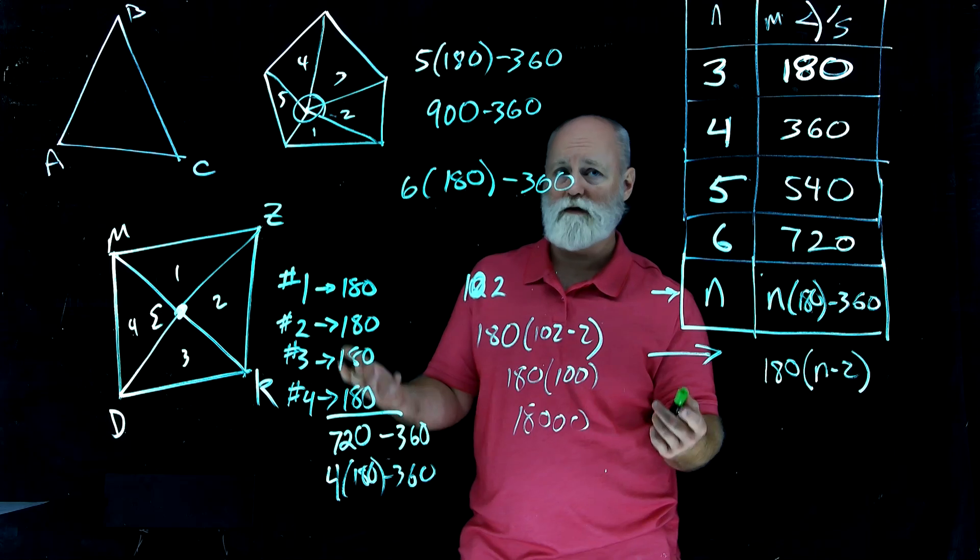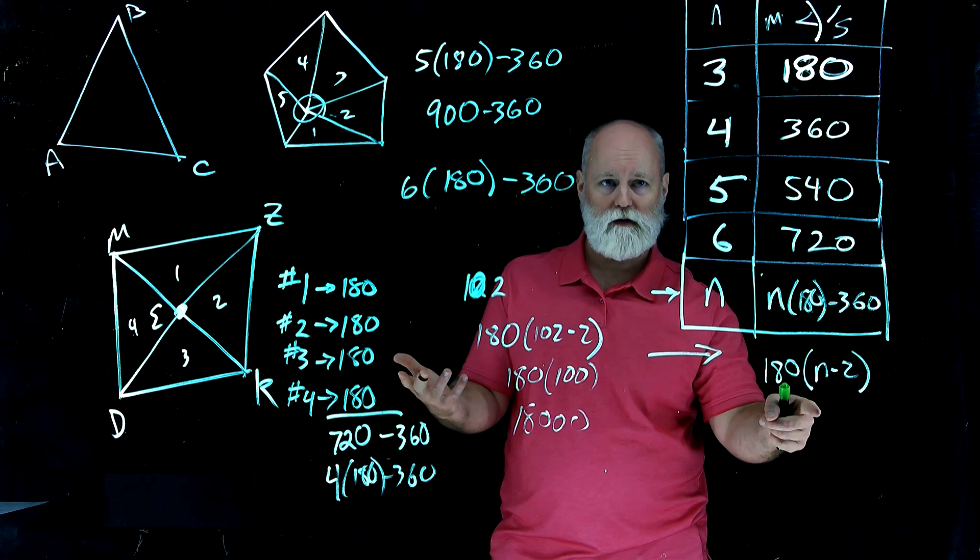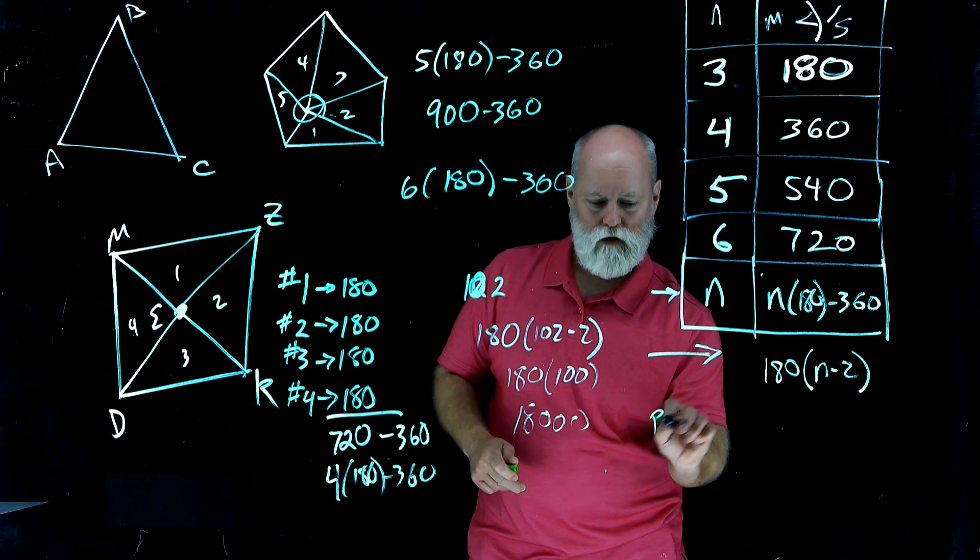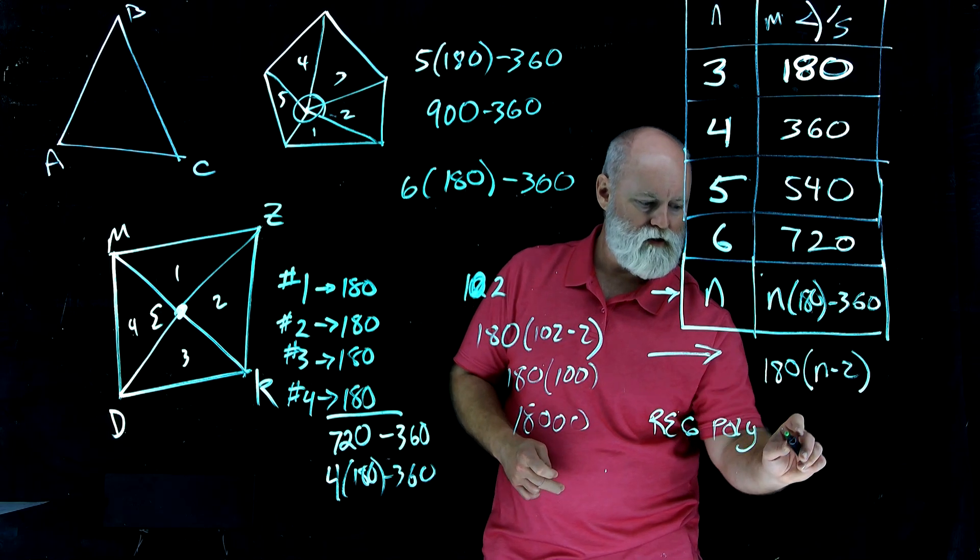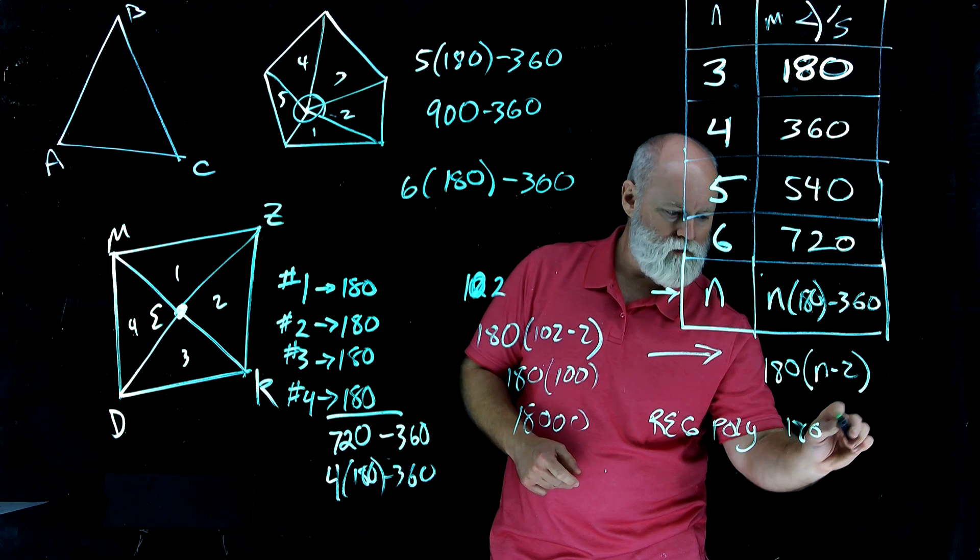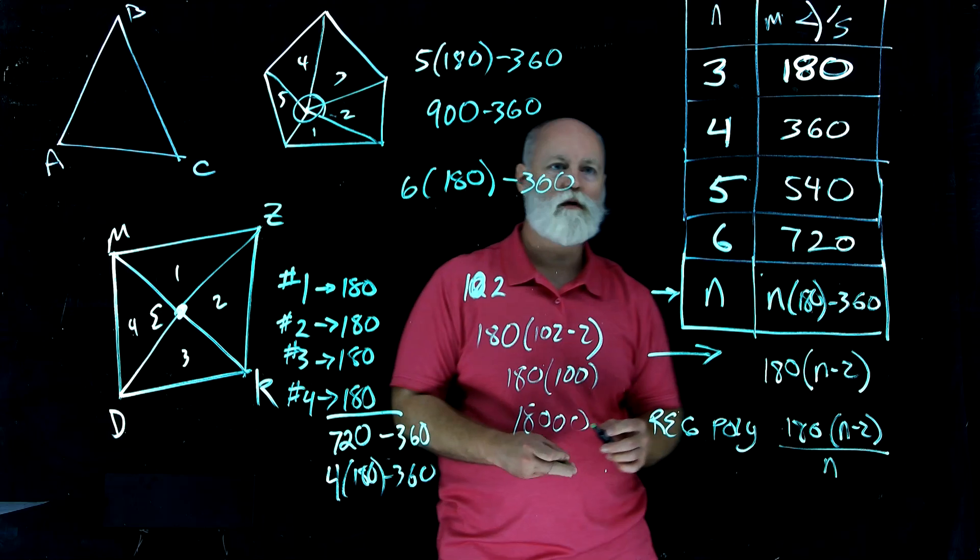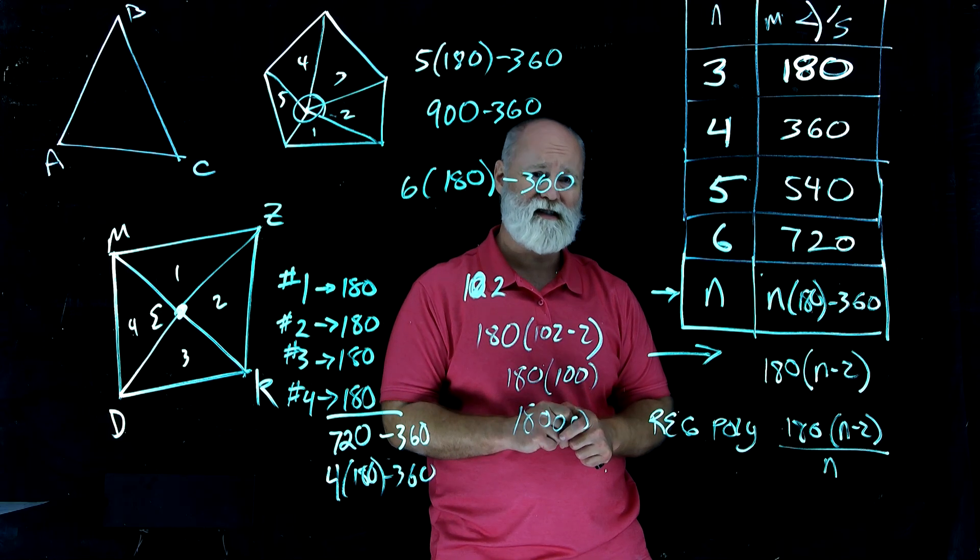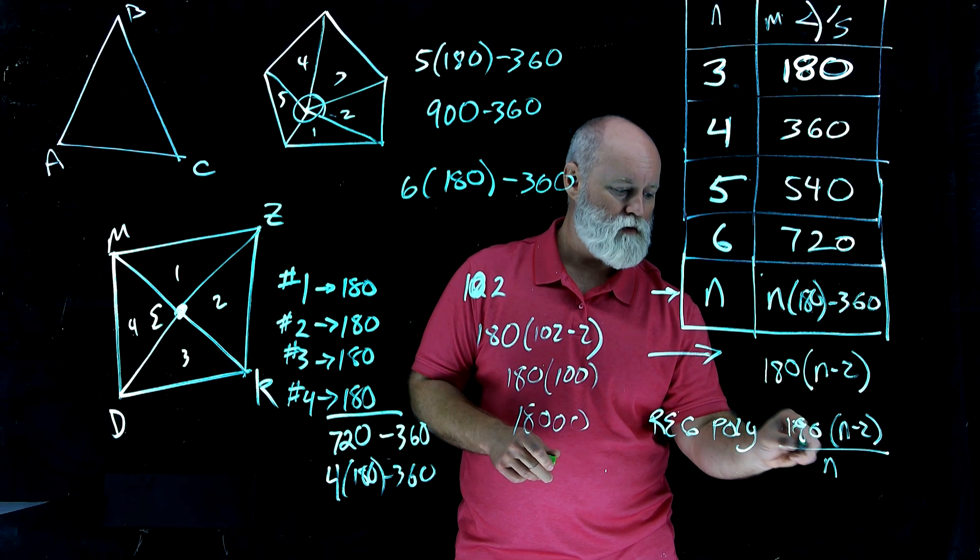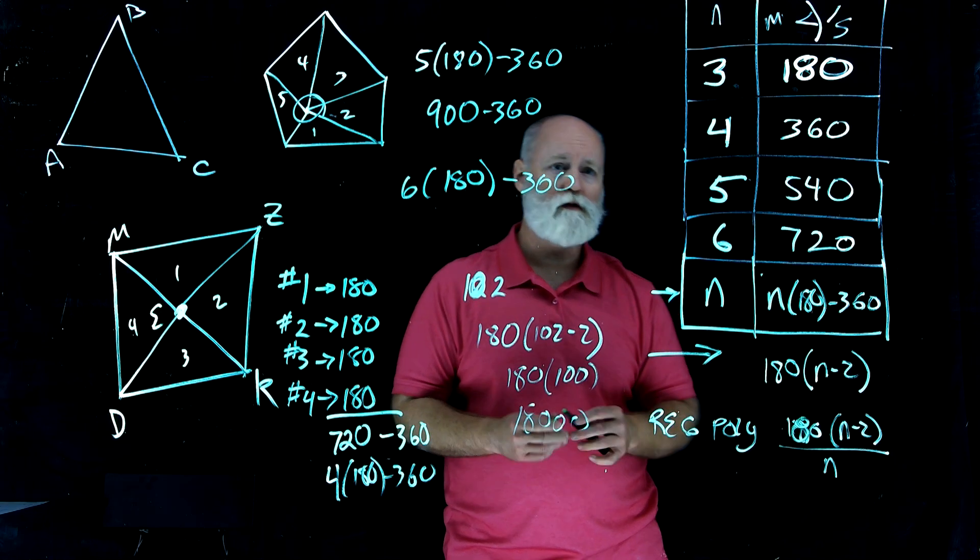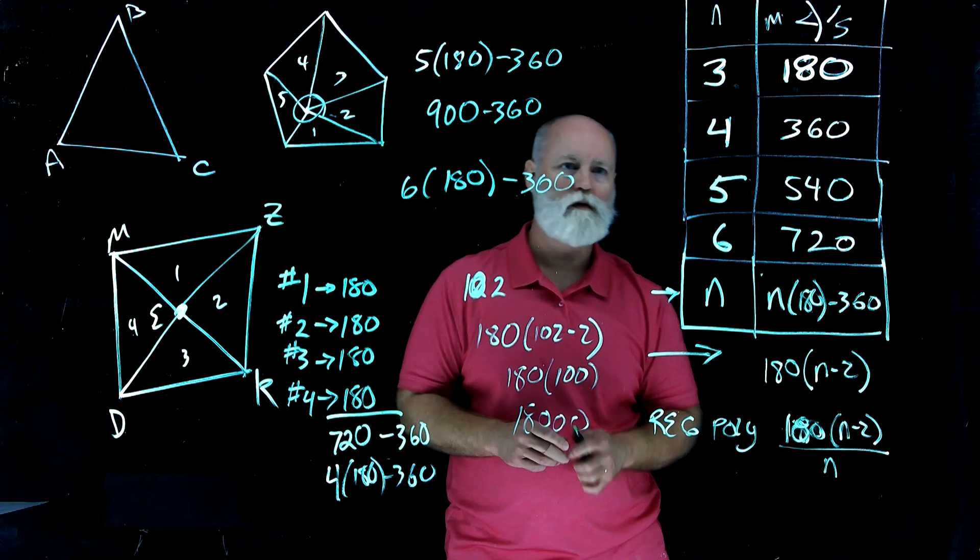So these are our two equations here that describe the angle measurement in a polygon. And then we can also figure out if it's a regular polygon, if we go under the assumption that it's a regular polygon, we can actually use this. We've got the angle measure of each one. So if we have a regular polygon, then it's just going to be 180 times N minus 2 over the number of sides it has. And that's going to tell us what the measure of each individual angle is of that regular polygon.